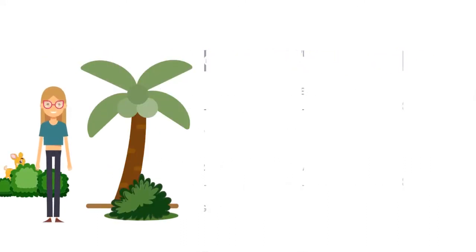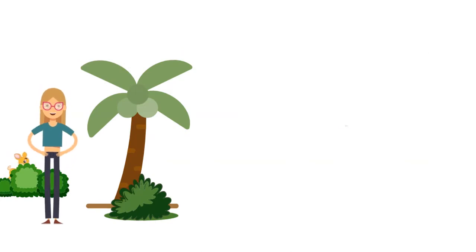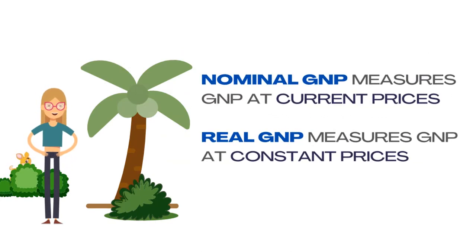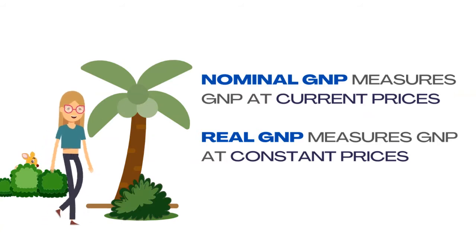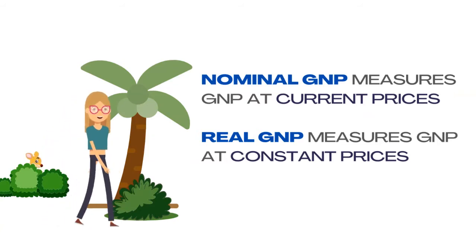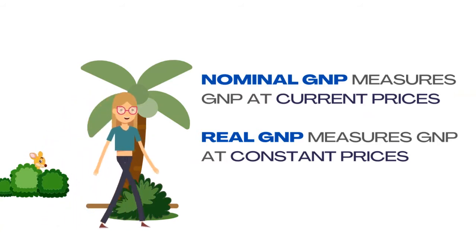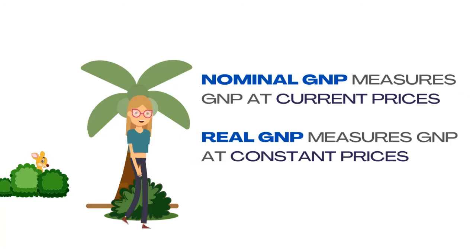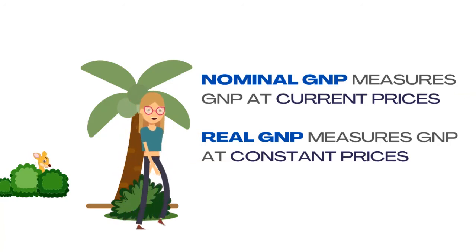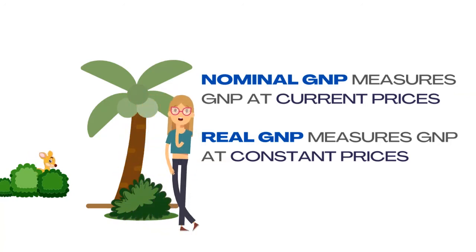One way to measure GNP is at current prices and constant prices. We call them nominal GNP and real GNP. The greater the difference between nominal GNP and real GNP, the greater the inflation.